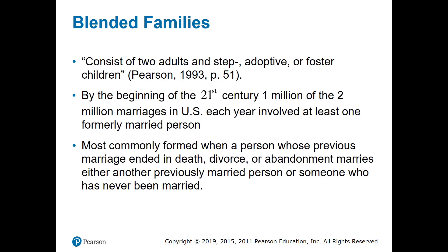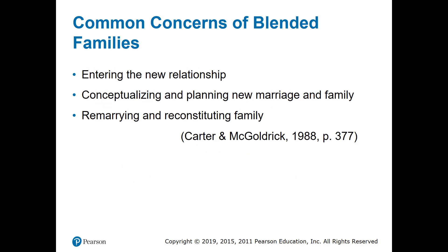Blended families consist of two adults and step, adoptive, or foster children. By the beginning of the 21st century, one million of the two million marriages in the U.S. each year involved at least one formerly married person. Most commonly formed when a person whose previous marriage ended in death, divorce, or abandonment marries either another previously married person or someone who has never been married. Common concerns include entering the new relationship, conceptualizing and planning the new marriage and family, and remarrying and reconstituting family.